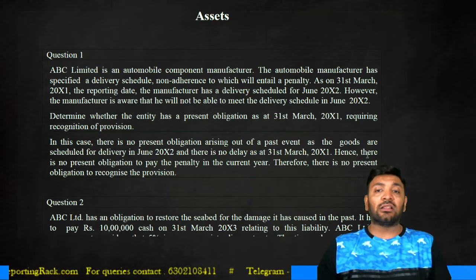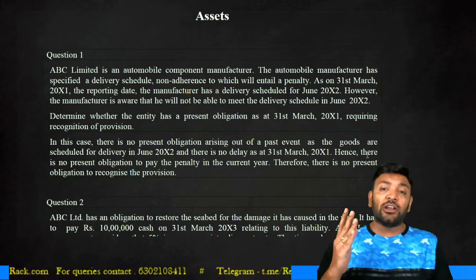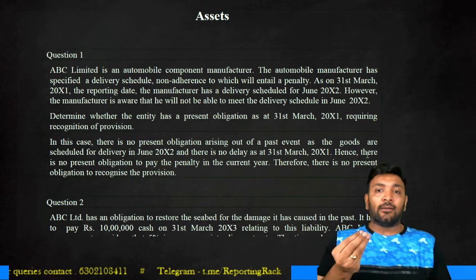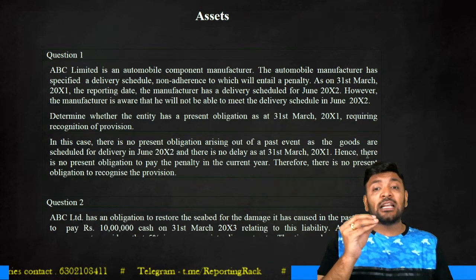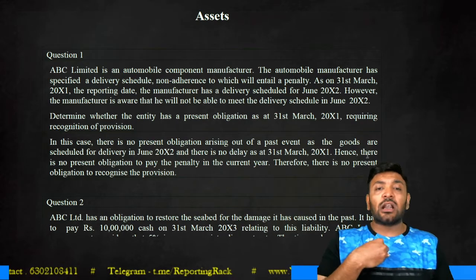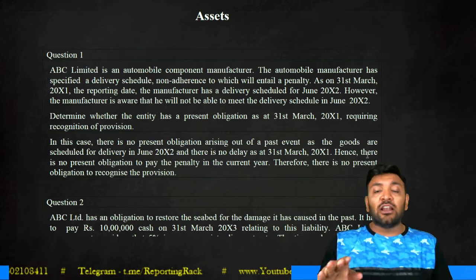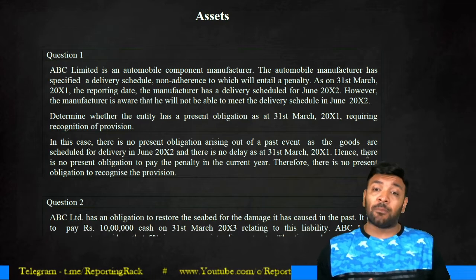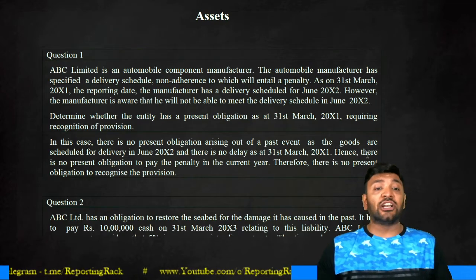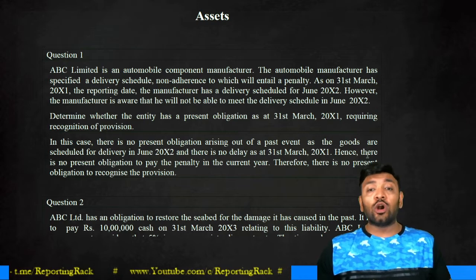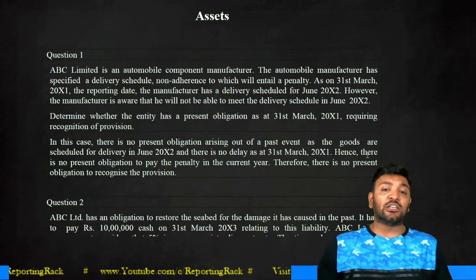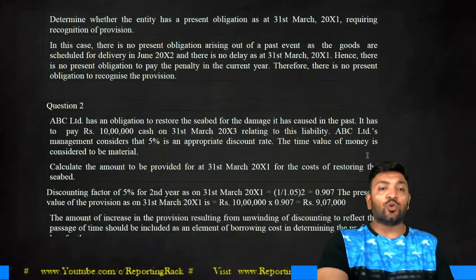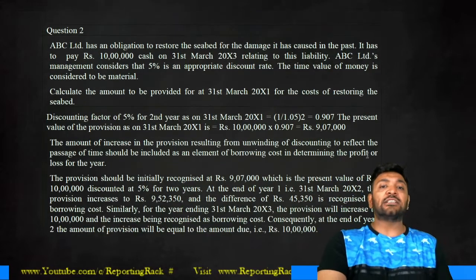When is the delivery falling due? In the month of June. Even though I know that I cannot meet the delivery schedule, it is a future event. Therefore, the obligation of penalty is a possible obligation — it is not a present obligation. In this case, I will not recognize any provision as per Ind AS 37. There is no present obligation arising from a past event, as the goods are scheduled to be delivered in June 2012 and there is no delay as on 31st March. Hence, there is no present obligation to recognize a provision.